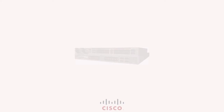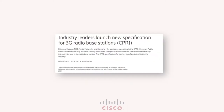Let us get started with the history of the protocol. Back in 2003, Ericsson, Huawei, NEC, Nortel Networks, and Siemens decided to define a critical component of a 3G base station. They first broke down one unit of a 2G base station into two units — the radio unit and its control unit — and then went ahead and defined the interface between these two units.